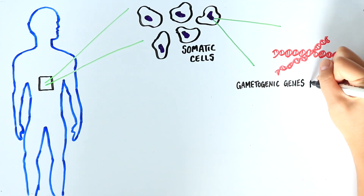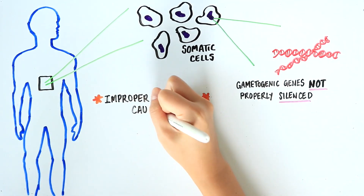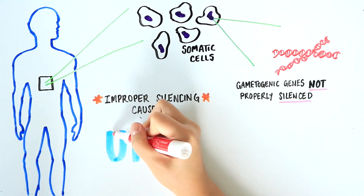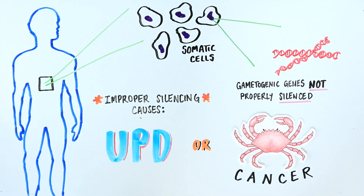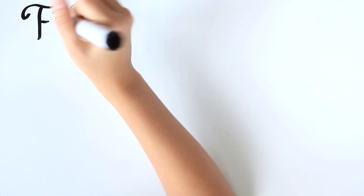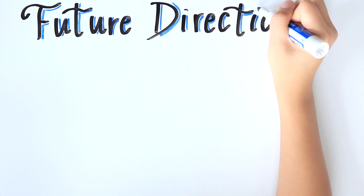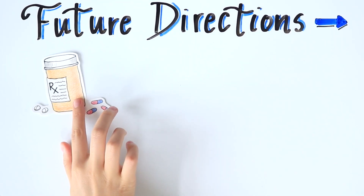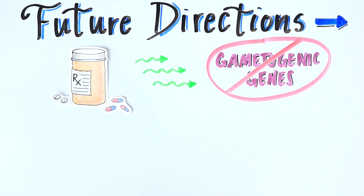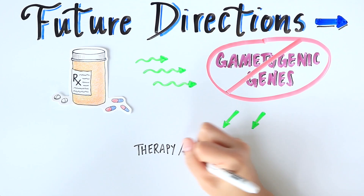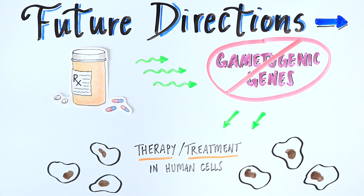Our results highlight the importance of silencing gametogenic genes in somatic cells. When this process malfunctions, chromosomes can be incorrectly divided between cells, causing UPD and leading to diseases such as cancer. Now our plan is to search for small molecules that can interrupt UPD in fission yeast, such as drugs that disrupt gametogenic gene expression, which can eventually be tested in human cells as a potential therapy or treatment option.